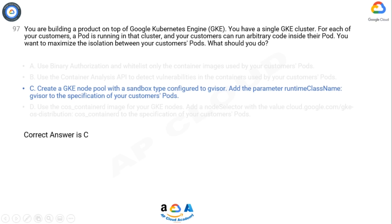Options A, B, and D are not specifically focused on maximizing isolation between customers' pods. Option A: Using binary authorization and whitelisting container images helps control the sources of container images used by customers' pods, but it doesn't directly address maximizing isolation between pods. Option B: Using the Container Analysis API to detect vulnerabilities in container images is valuable for ensuring security, but it doesn't directly address isolation between customers' pods.